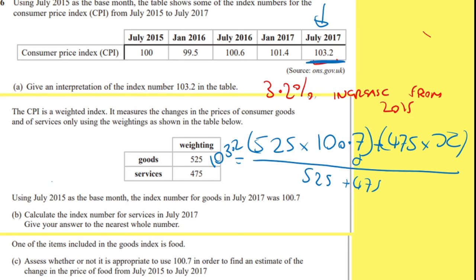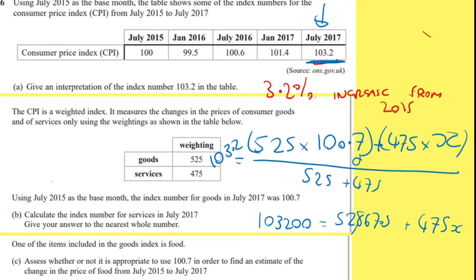All we have to do now is solve it. I'm going to times both sides by 525 plus 475 — so times both by 1,000. That gives me 103,200, and then I've got 525 times 107, which gives me 56,175... adjusting: 525 times 107 equals 56,175 plus 475x. Subtracting, then dividing both sides by 475, which gives me the answer of 105.96.